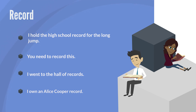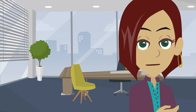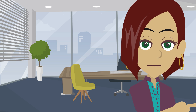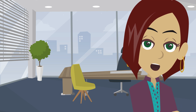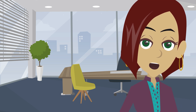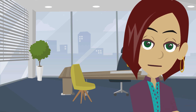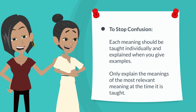And 'I own an Alice Cooper record' refers to the plastic disc that plays music. If you look up 'record' and only see the first example, you may think it literally means to have a disc in your hands — but trying to convey the meaning that someone can hold a record while it's intangible is inconceivable. To stop confusion, each meaning should be taught individually, and when you give examples, only explain the most relevant meaning at the time it is taught.